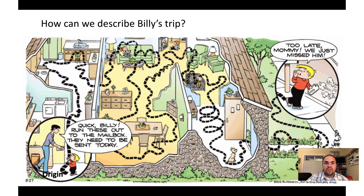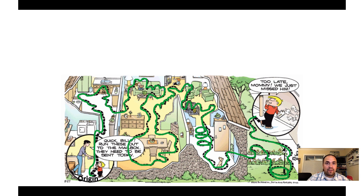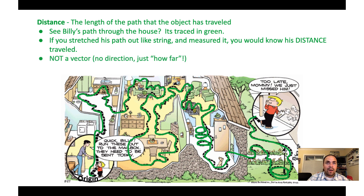Let's look at a Family Circus cartoon where Billy was supposed to catch the mailman, but Billy took a really long path and missed him. We're going to describe his motion, starting with how far Billy went. If we look at Billy's path, it's a very squiggly path through the house — I overlaid a green line so it's easier to see. Distance is how far did the object go — how far did Billy's shoes have to walk to get from start to finish. Distance is not a vector; it tells us a distance but not a direction, so it is a scalar value giving us only the magnitude.